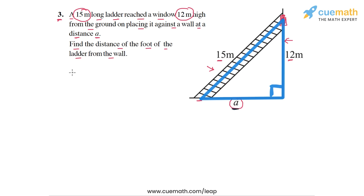So let's apply the Pythagoras theorem. We must have the square of the hypotenuse or 15 square. This must be equal to the sum of the squares of the other two sides. So this must be equal to 12 square plus a square.